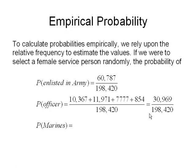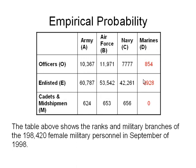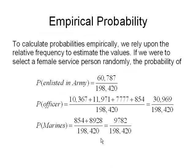Now if I were to do this for Marines, so I wanted to know the probability that a female service person was a Marine, I'd go back to my table, and now I would find the Marines in here. So 854 plus 8,928 plus 0, and then I'd figure out my relative frequency with those numbers. So when I add those values together, I get 9,782, and if I divide that by the total number of service persons, which was 198,420, that fraction would give me the probability.